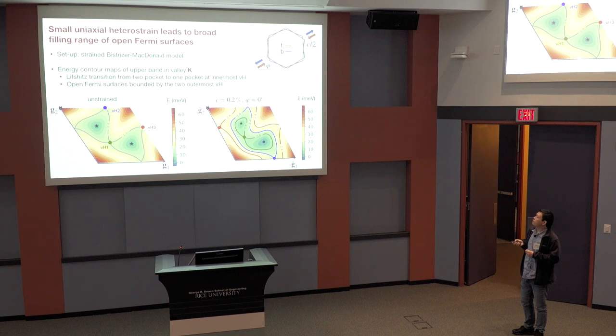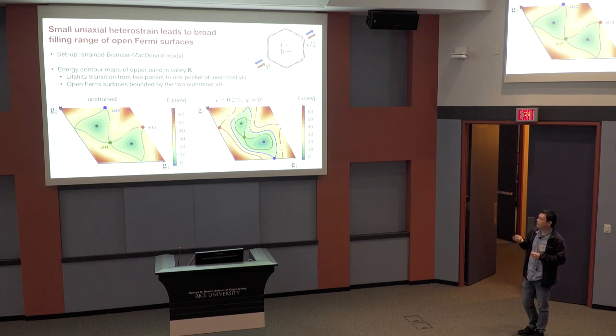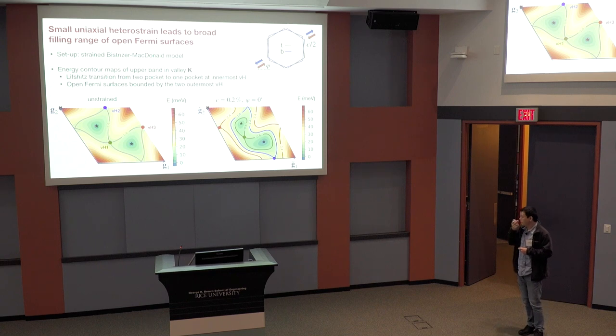And for the lowest van Hove point, closest to the charge neutral point, that separates two elongated Fermi pockets surrounding the two Dirac cones. And there's an interesting intermediate region, which is already absent from the unstrained calculation, which is from this range 0.6 to 1.4, where these two pockets form a closed percolated pocket that surrounds both Dirac cones.